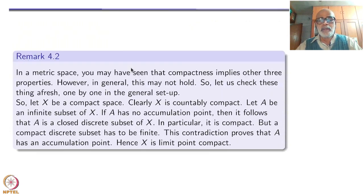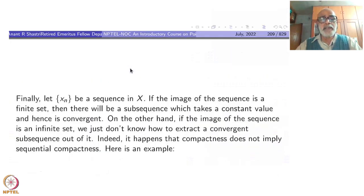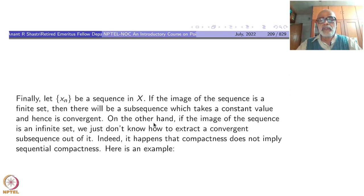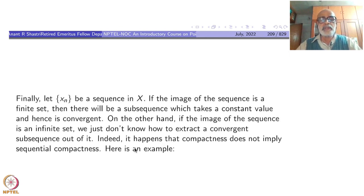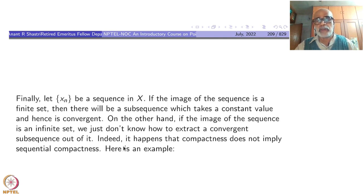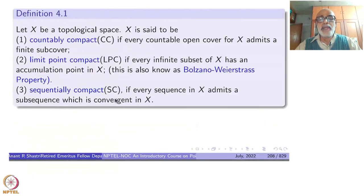Maybe the third property — sequential compactness — is also implied, but we have to be careful. Let Xn be any sequence in X, a compact set. If the image of the sequence is a finite set, there will be a subsequence taking a constant value, which is convergent. On the other hand, if the image is an infinite set, we just don't know how to extract a convergent subsequence. Indeed, compactness does not imply sequential compactness — this may be somewhat surprising. Let us verify an example to make sure that compactness in general need not imply sequential compactness.